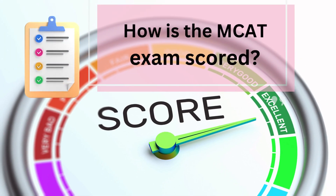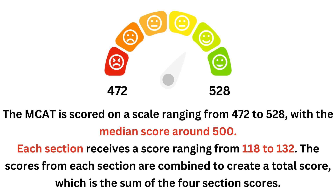How is the MCAT scored? The MCAT is scored on a scale ranging from 472 to 528, with the median score around 500. Each section receives a score ranging from 118 to 132. The scores from each section are combined to create a total score, which is the sum of the four section scores.